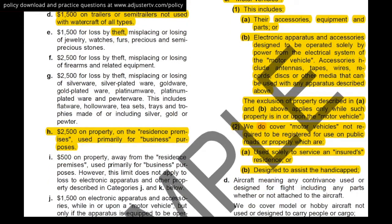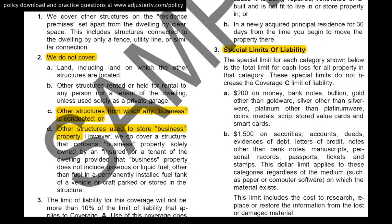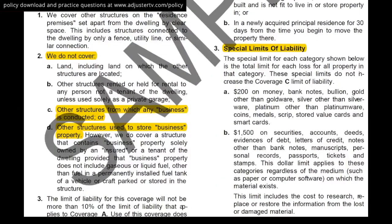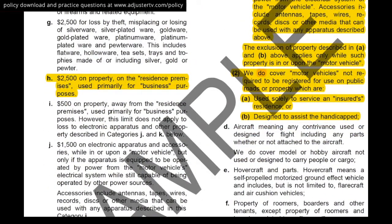For property on the residence premises used primarily for business purposes, this ties back to Coverage B's exclusion for other structures used for business. There is still going to be a $2,500 limit on tools or business equipment that you use for a business operated out of your house or garage or anywhere on the residence premises.